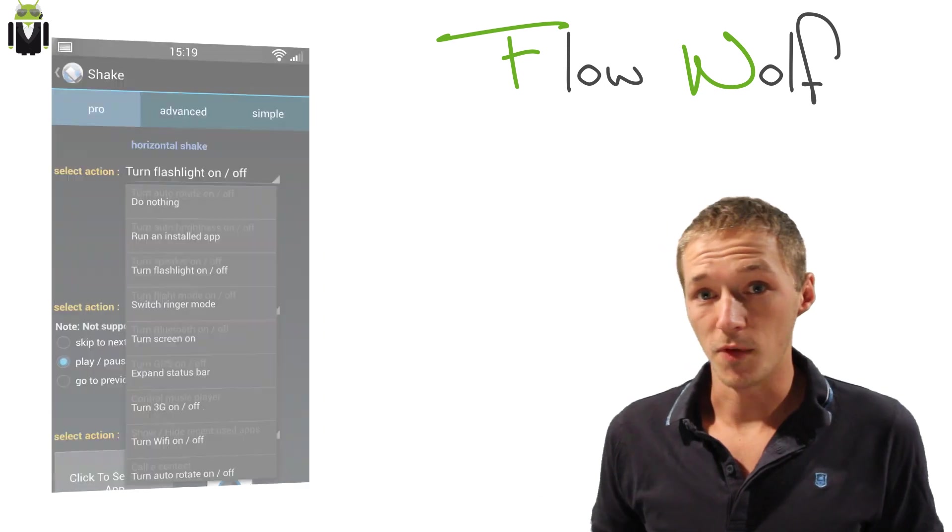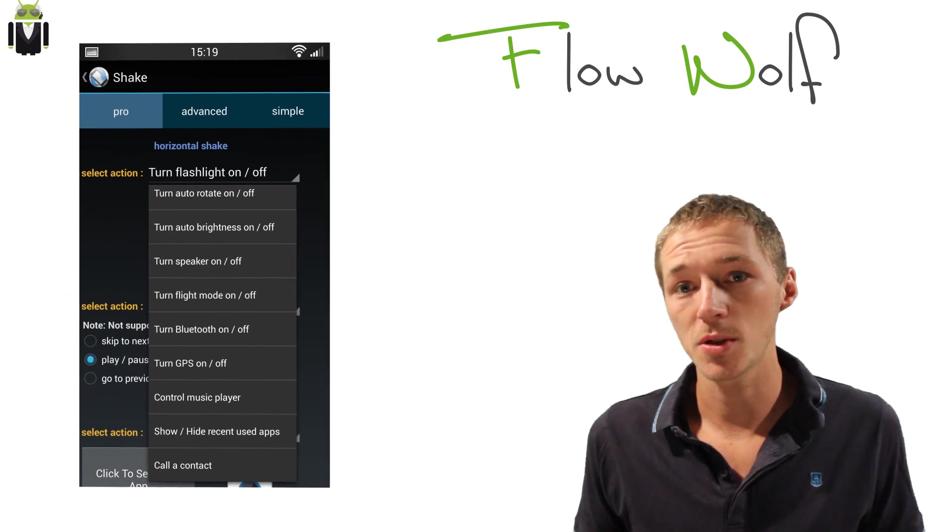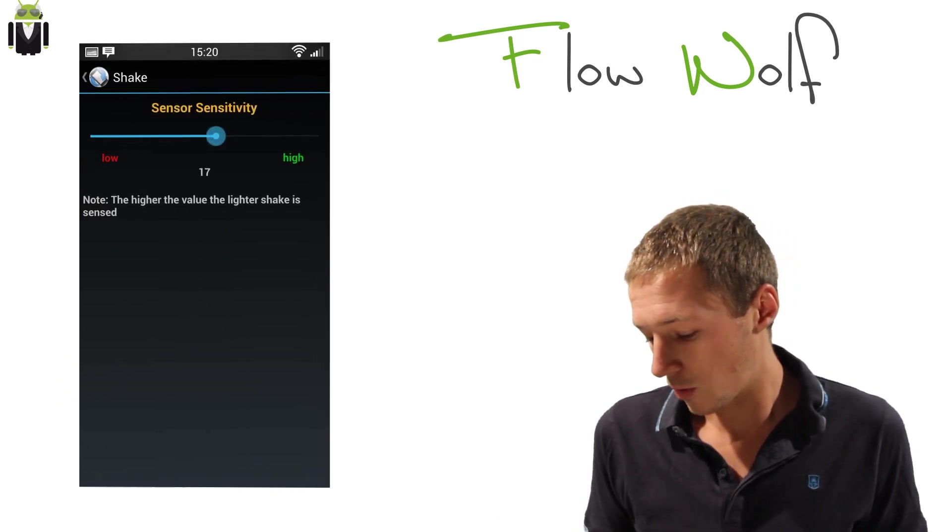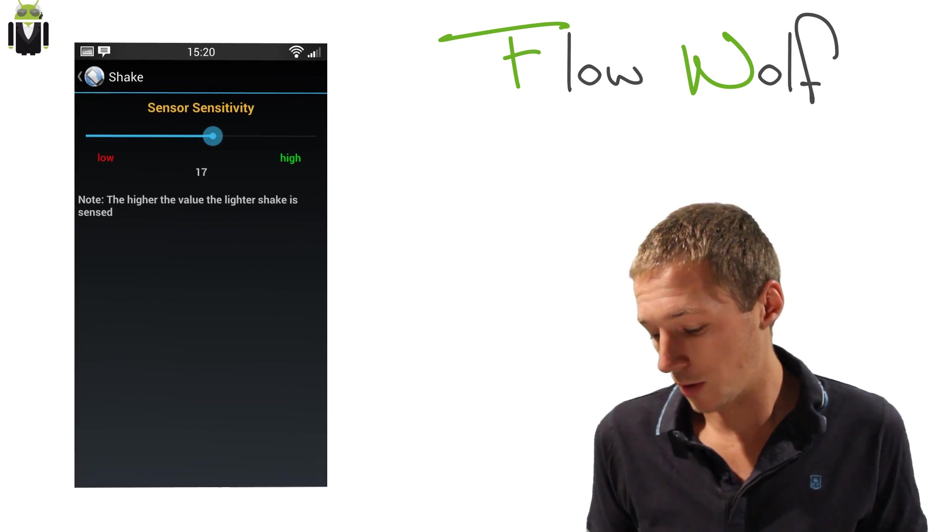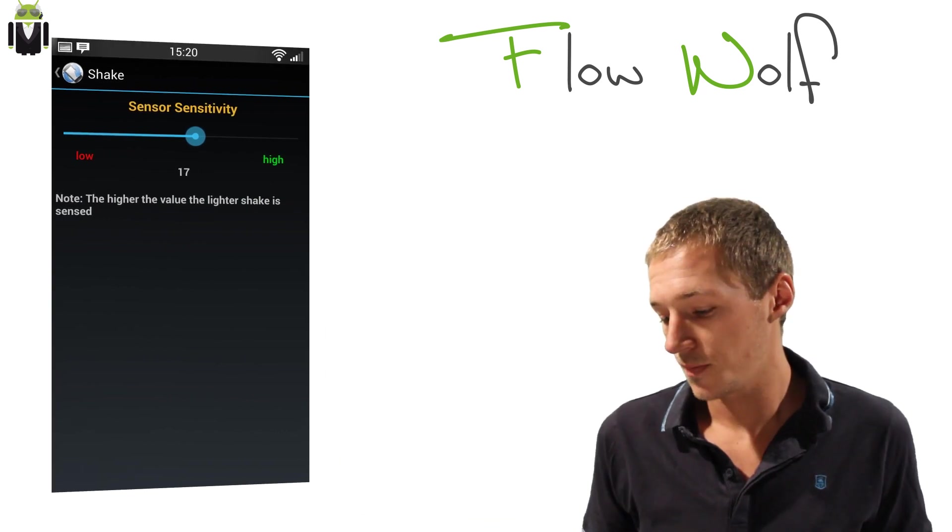Then you can change the sensor sensitivity from 0 to 29 or 30. You can activate the service and start it at phone startup, so when you start your phone it just starts.